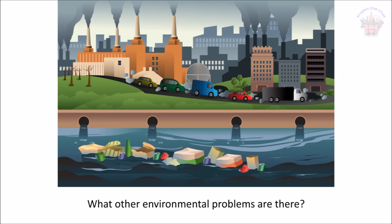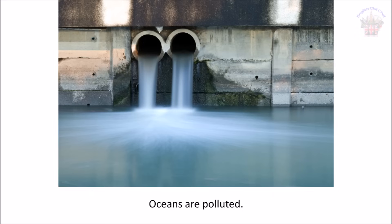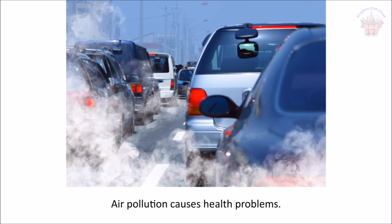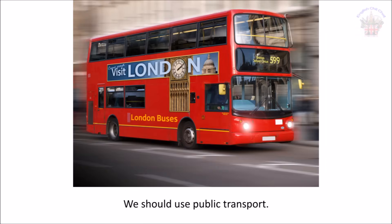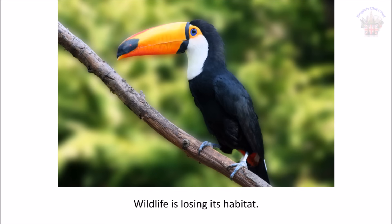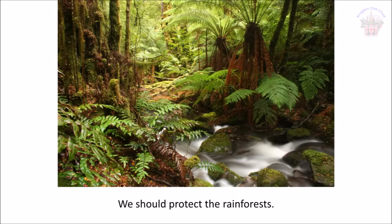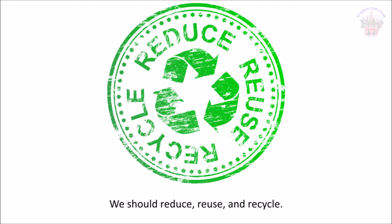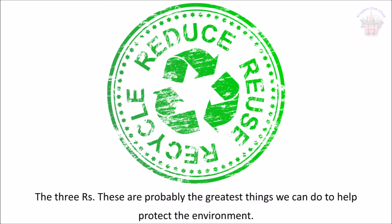What other environmental problems are there? Oceans are polluted — we should save water in the home. Air pollution causes health problems — we should use public transport. Wildlife is losing its habitat — we should protect the rainforests. Landfills emit greenhouse gases — we should reduce, reuse and recycle. The three R's are probably the greatest things we can do to help protect the environment.